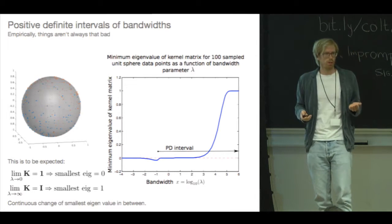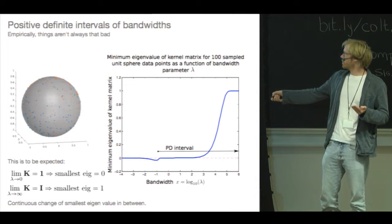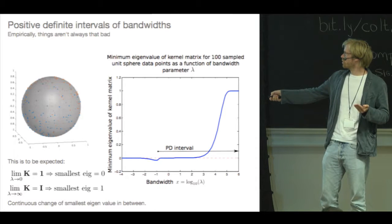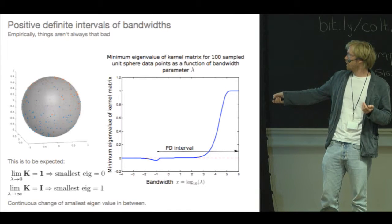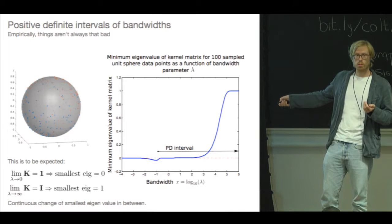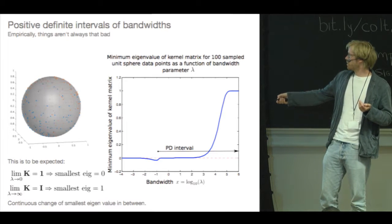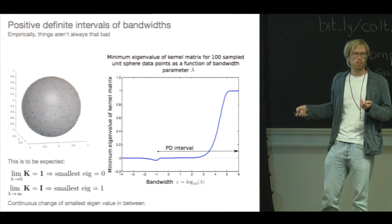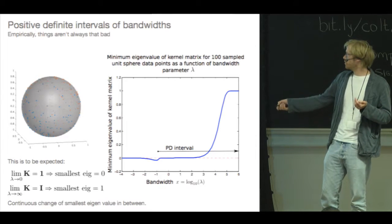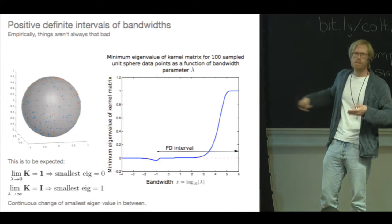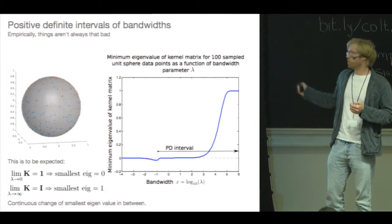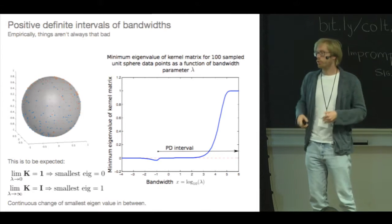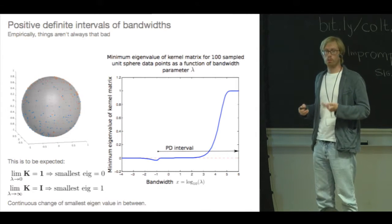So this really shouldn't surprise you, right? I mean, if you take the limiting case of the bandwidth going to zero, well, then your kernel matrix will have the smallest eigenvalue of zero. In the limiting case of lambda going to infinity, the smallest eigenvalue of the kernel matrix will be one. And since the function describing the smallest eigenvalue will change continuously, then this will hint, I'm hand waving here, hint that there will be intervals where we should expect positive definite kernel matrices.